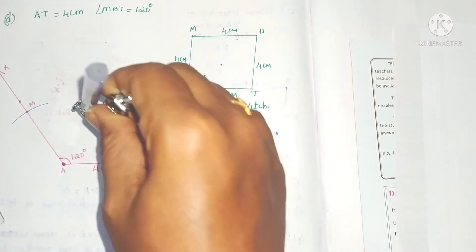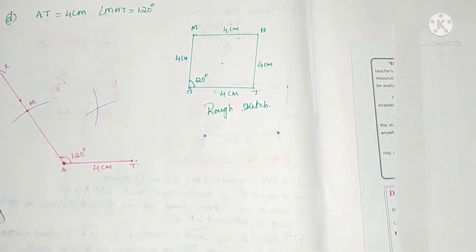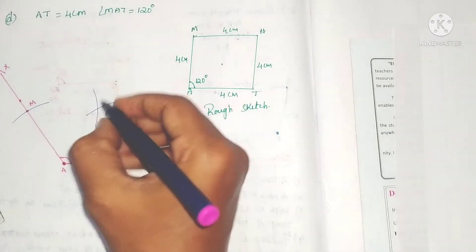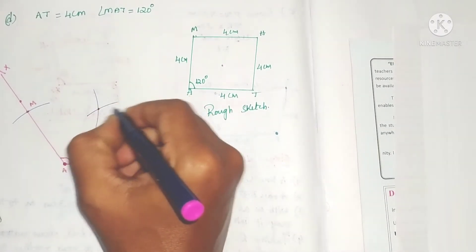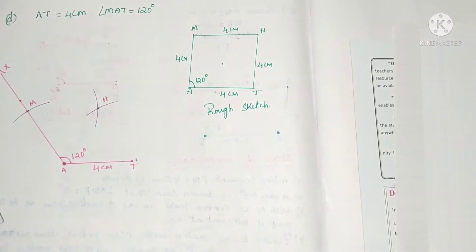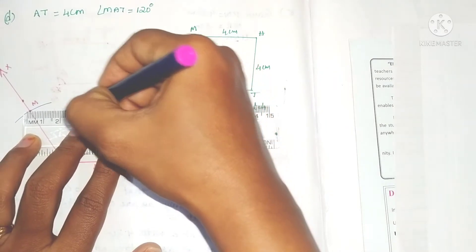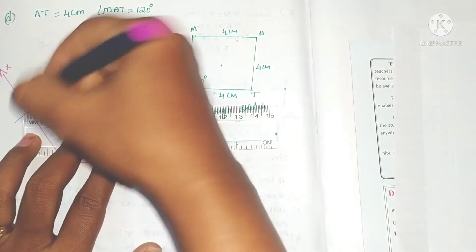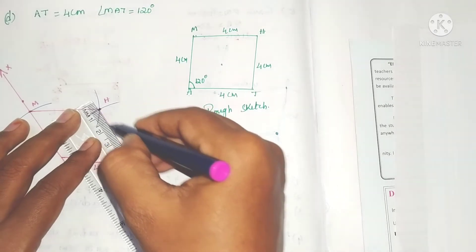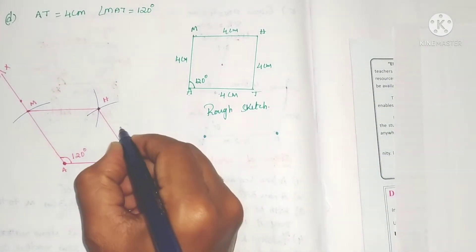From T also, with the same radius, draw an arc. The point of intersection is H. Now join MH and TH. This is the required rhombus.